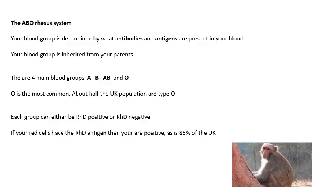The ABO rhesus system: rhesus is actually a type of monkey, and this system was first worked out through experiments with rhesus monkeys and rabbits. Your blood group is determined by what antigens are present in your blood, and you inherit that from your parents — it's genetic. The four main blood groups are A, B, AB, and O. O is the most common — about half the UK population, including the speaker, are type O. Each group can be either rhesus positive or rhesus negative. If your red cells have the RHD antigen, you're positive, and about 85% of the UK are positive.